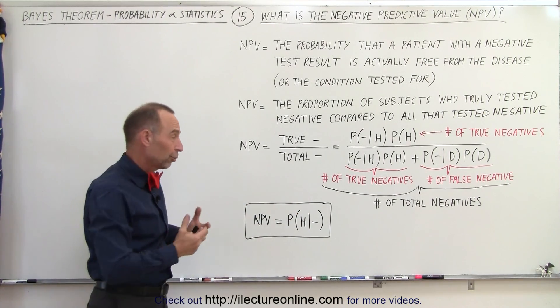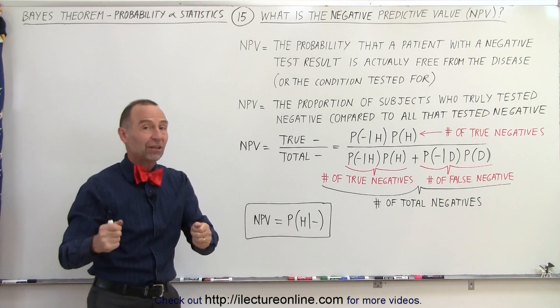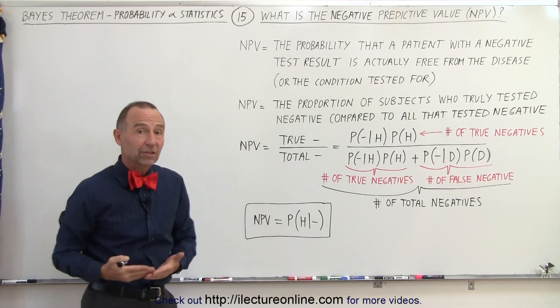And of course, in terms of testing, you want that number to be very, very high. You don't want to give somebody a negative test result and have a high probability that they actually have the condition.